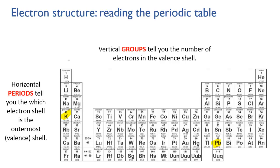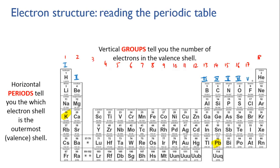There are several group numbering systems. The newest one goes from 1 to 18 straight across. But there is an older system, which is more useful at this stage — it uses Roman numerals and goes from 1 to 8, ignoring the transition metals for now. This number corresponds exactly to the number of valence electrons that the elements in each group have.